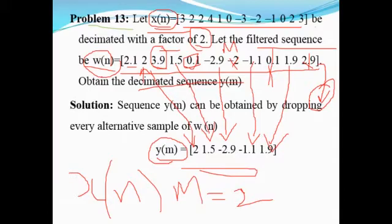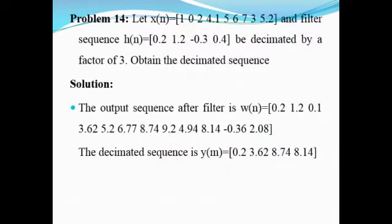If the decimation factor changes, the output decimated sequence will change accordingly. In the next example, x of n is given with filter sequence h of n, and the filtered output is decimated by a factor of 3 instead of 2. We have to find the decimated sequence.